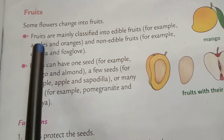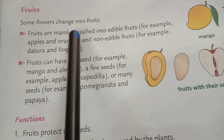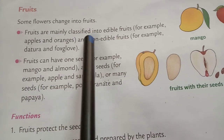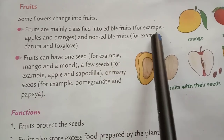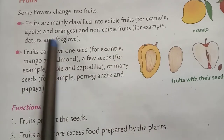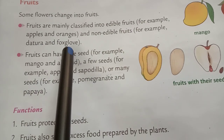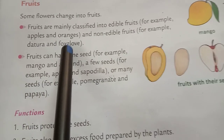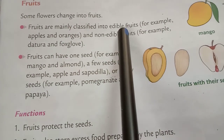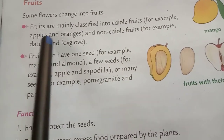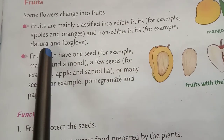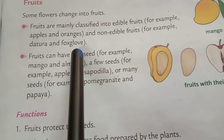Now fruits. Some flowers change into fruits. Fruits are mainly classified into edible fruits — for example, apple and oranges — and non-edible fruits — for example, datura and foxglove.